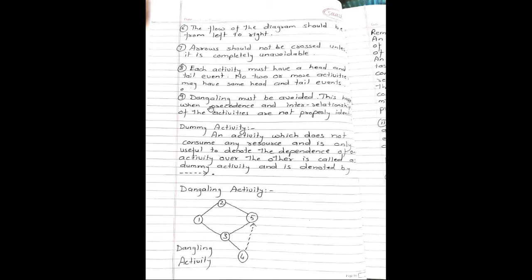Next rule: Each activity must have a head and tail event. Not two or more activities may have same head and tail events. Dangling must be avoided. This happens when precedence and interrelationship of an activity are not properly identified.